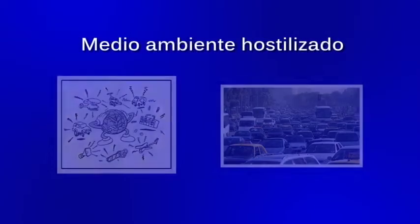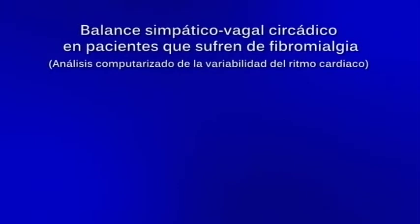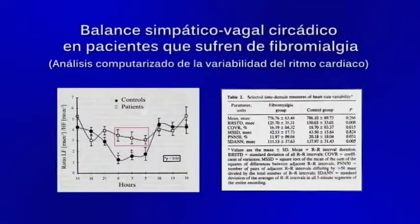Con la industrialización hemos perdido la noche, y el insomnio es algo muy frecuente en la fibromialgia. Antes, después del atardecer venía el silencio, la oscuridad y el descanso; ahora sigue el ruido, la actividad y la luz. Aquí vemos el índice simpático-vagal —que es la cantidad de adrenalina que están produciendo— durante las 24 horas del día: primero los controles en negro. Una mujer normal tiene cierta cantidad de adrenalina durante el día, baja en la noche y eso le permite dormir. Las personas con fibromialgia tienen una incesante hiperactividad simpática las 24 horas del día, lo cual fue corroborado con los índices de variabilidad.